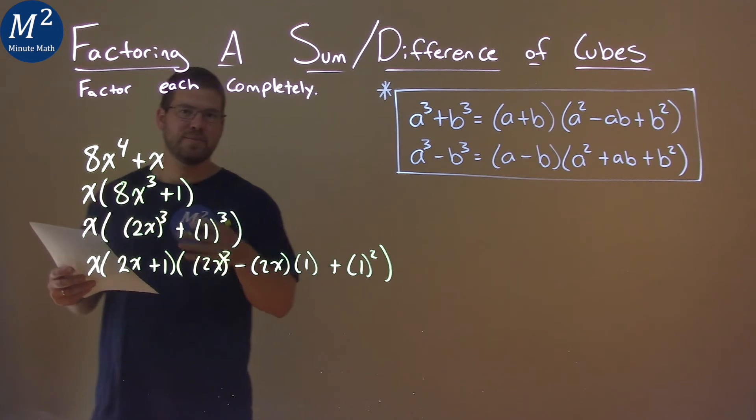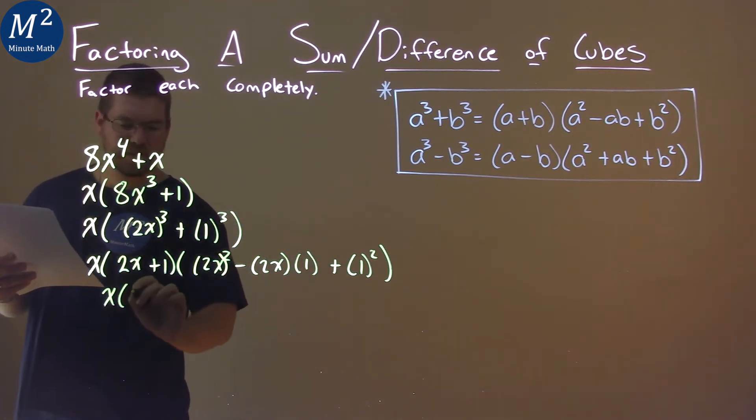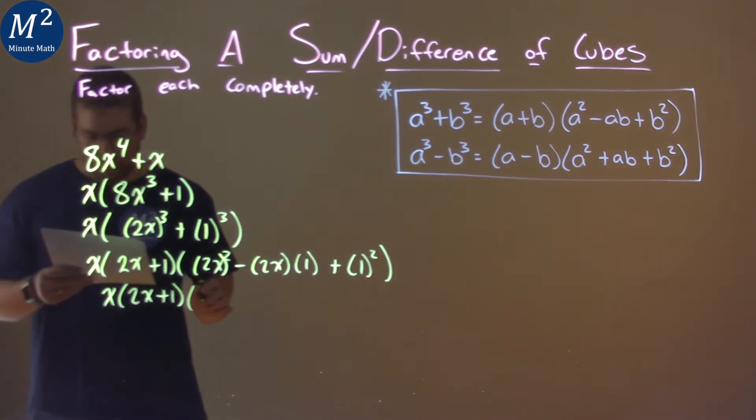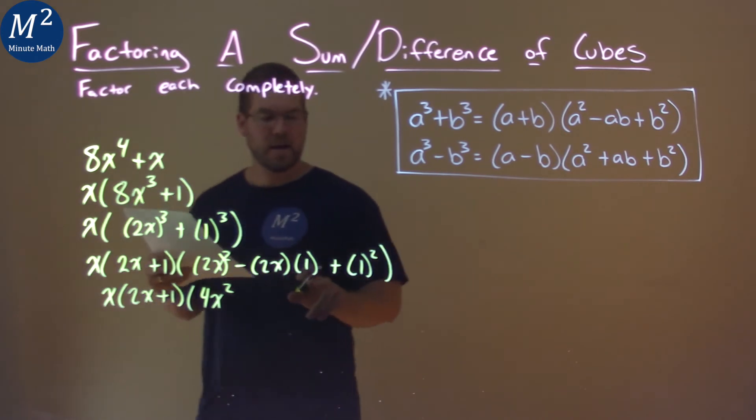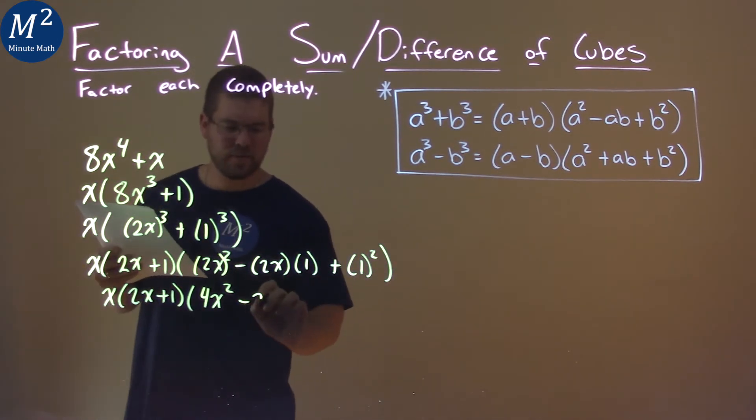And now we want to keep simplifying. x times 2x plus 1 just comes down. But 2x squared, remember it's all squared, is 4x squared. 2x times 1 is 2x, so we subtract 2x here.